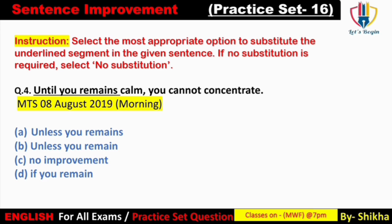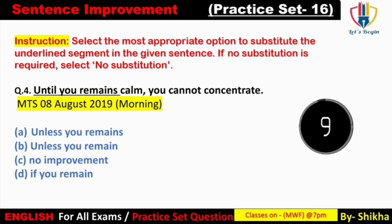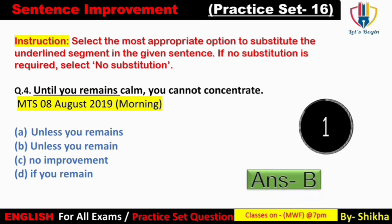Next: 'Until you remain calm you cannot concentrate.' Yeh do sentences aapas mein match nahi bana rahe — 'you cannot concentrate' is negative. Isi liye 'if' ka use galat hoga; yahan ek negative word ki zaroorat hai. Option A mein 'unless you remains' — 'you' ke saath 'remains' nahi, 'remain' aayega. Option B mein 'unless you remain' — verb form sahi hai. Answer: option B. 'Unless you remain calm, you cannot concentrate' — matlab ki agar tum shant nahi rahate ho toh concentrate nahi kar paoge.